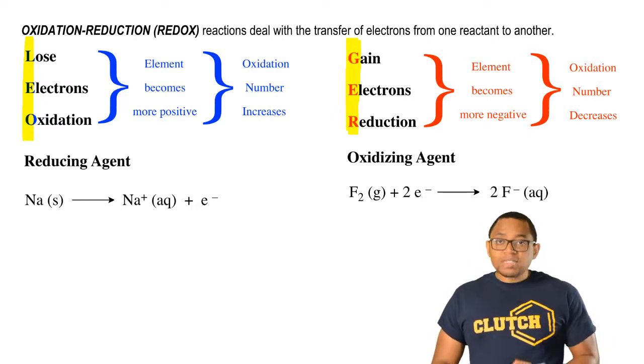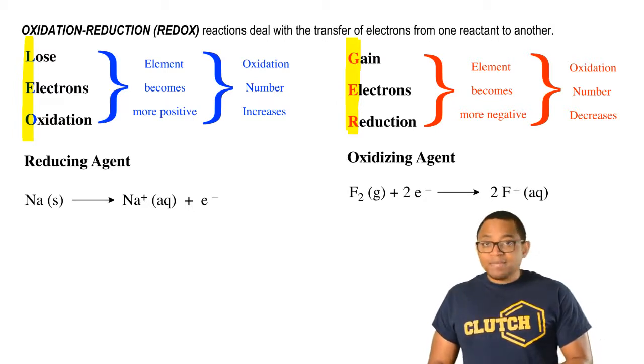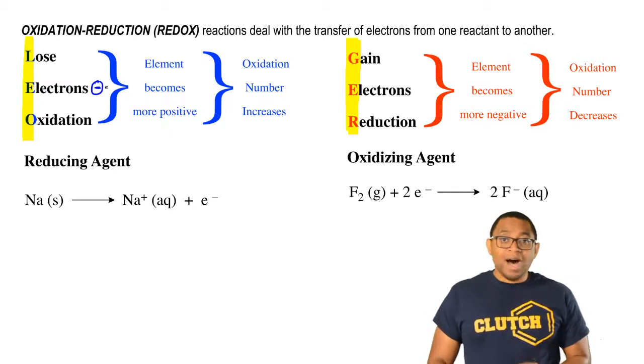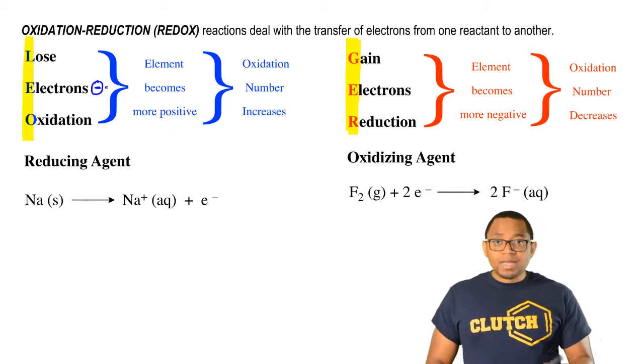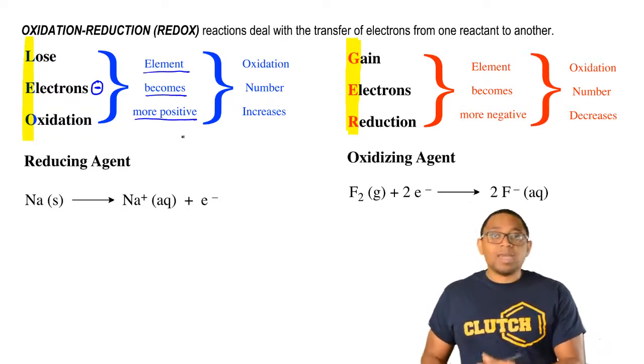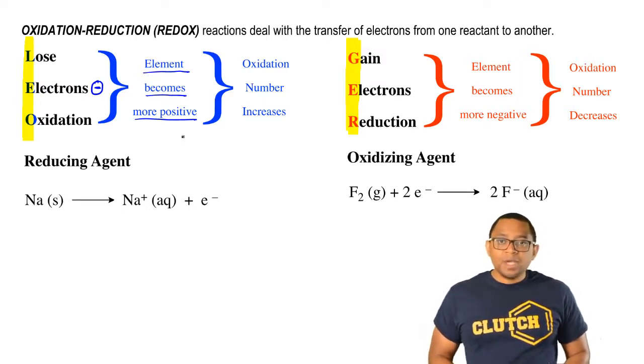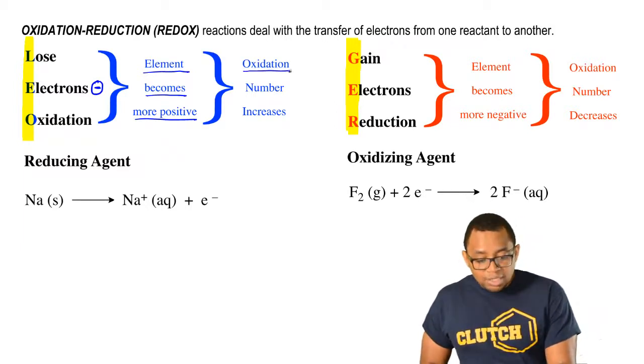Leo stands for lose electrons oxidation. Electrons are negatively charged. If I'm losing negatively charged electrons, that means I as an element am becoming more positive because I'm losing negative things. When you're becoming more positive, that means your oxidation number is becoming more positive. Your oxidation number increases as a result.